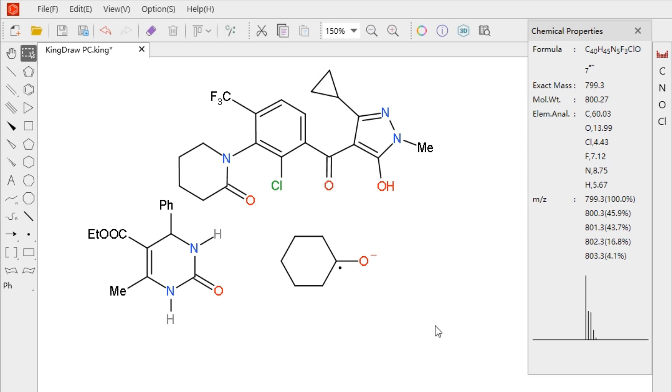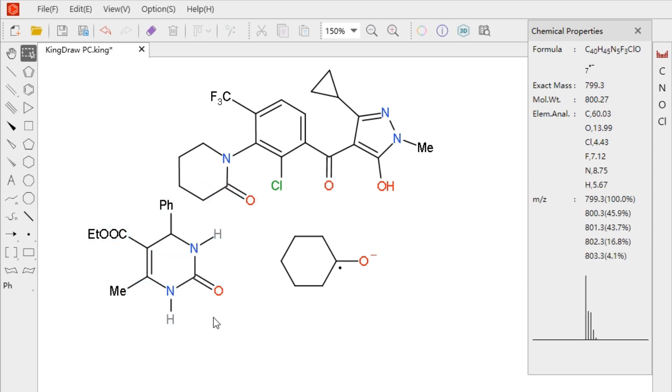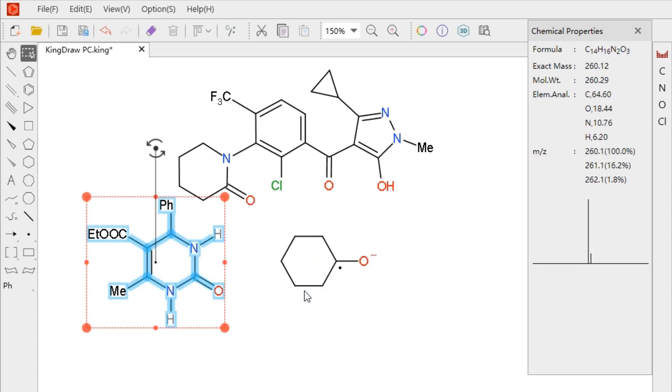Here is a method to quickly select a single structure. When it is not convenient for selection, we can right-click the bond or elements in the structure and choose Select Molecule option in the right-click menu. We can quickly select the current molecule.